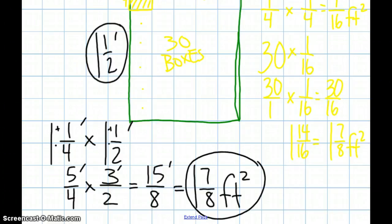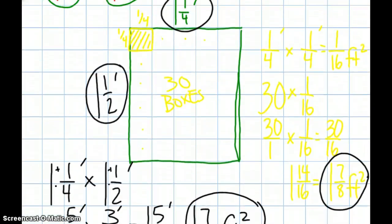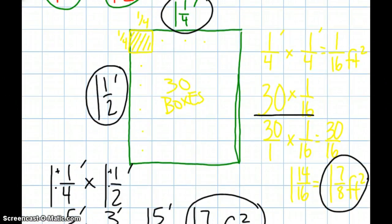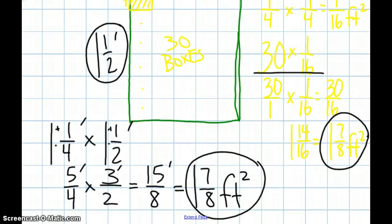So, again, either one of these ways is appropriate. It really comes down to whether you prefer multiplying just a whole number by a fraction, or if you prefer multiplying a mixed number by a mixed number.